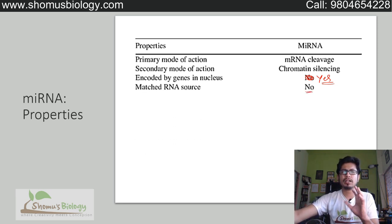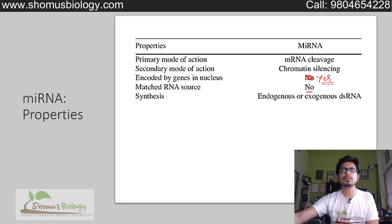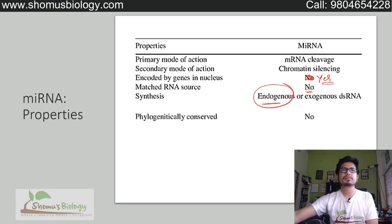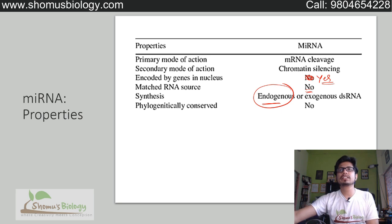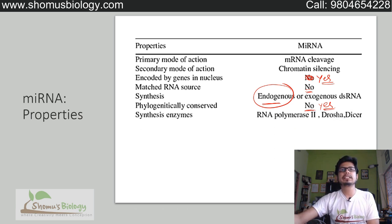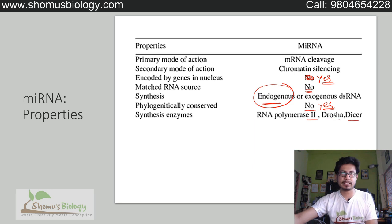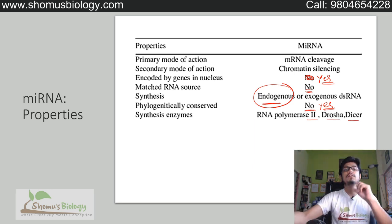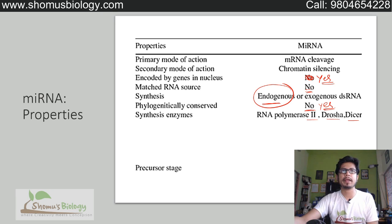Regarding the match to the RNA source, the match is not 100% always — it is near about a match, not exactly perfect. Synthesis can be endogenous or exogenous, but mostly endogenous in origin. miRNA is phylogenetically conserved — yes, it is conserved. The synthesis enzymes involved are RNA polymerase 2, Drosha, and Dicer. These are the enzymes actually used for the synthesis of miRNA.